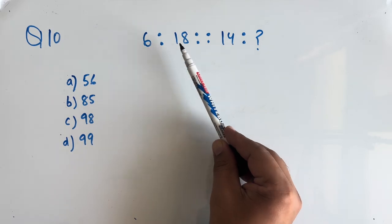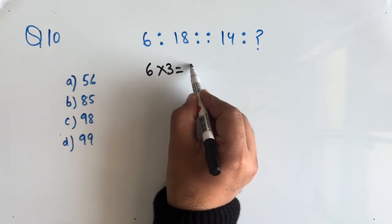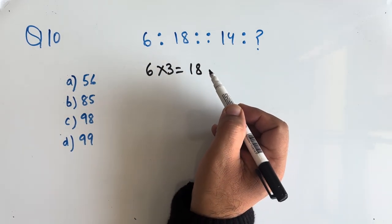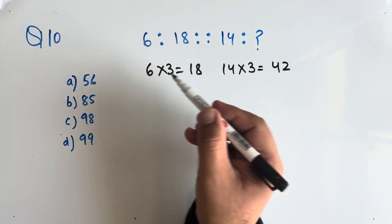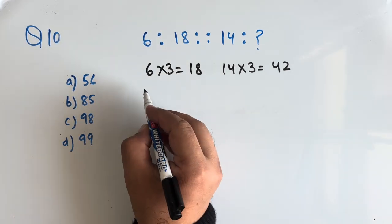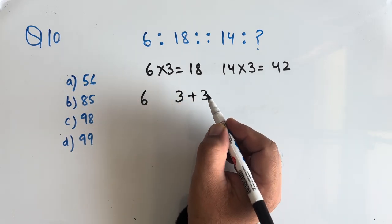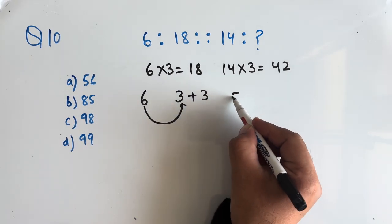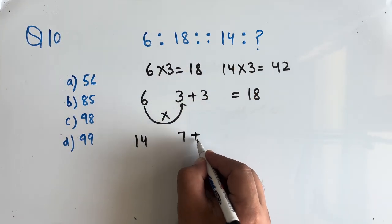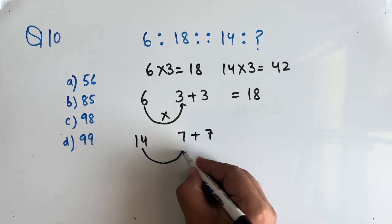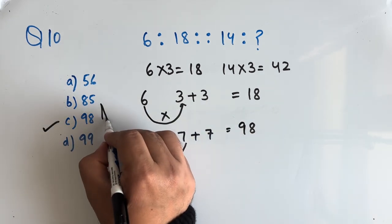Question number 10: 6 is to 18, what is 14 is to? Now if we multiply 6 by 3 we get 18. In the similar way, if we multiply 14 by 3 we get 42. But 42 is not in the option. Now if we write 6 as 3 plus 3 and multiply 6 by this 3, we get 18. In the similar way, 14 can be written as 7 plus 7, and if we multiply 14 by 7 we get 98. So option C, 98 will be the correct answer.